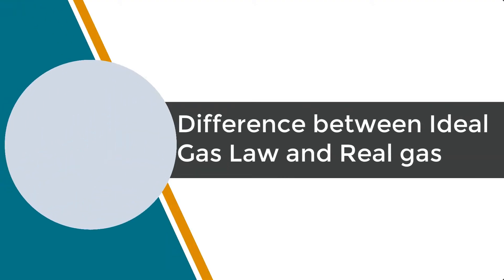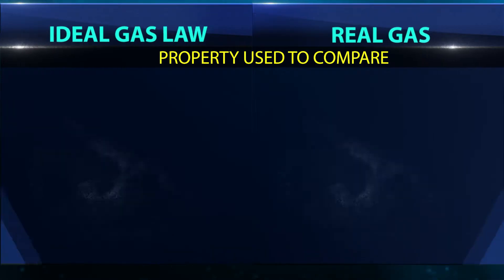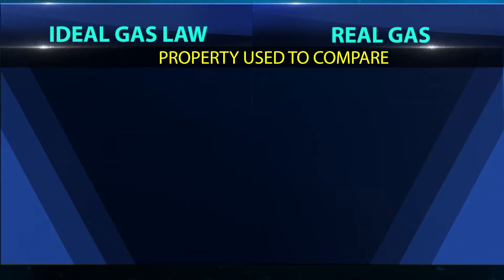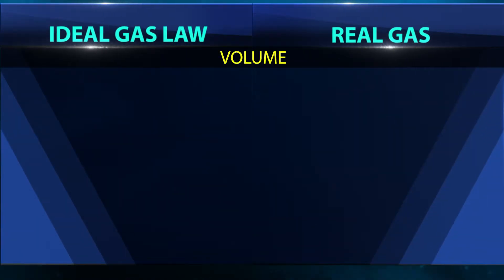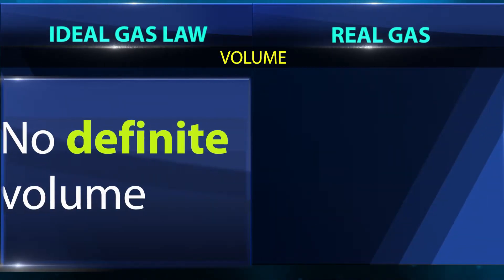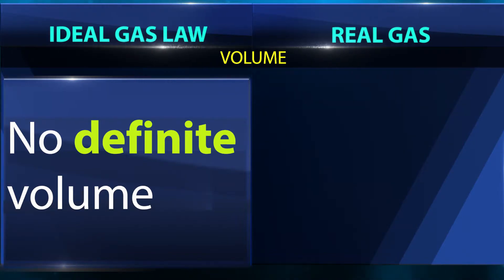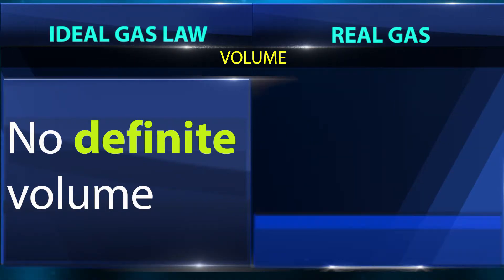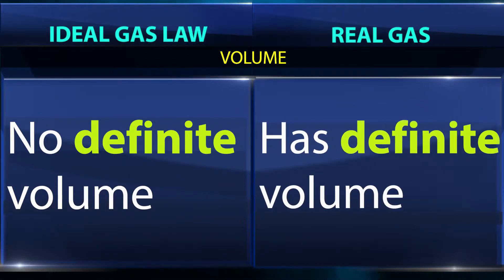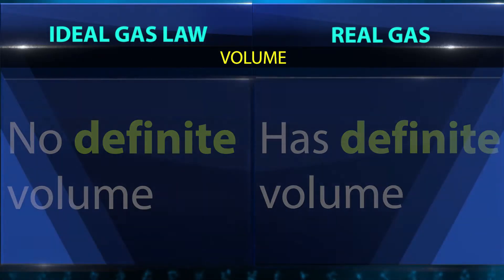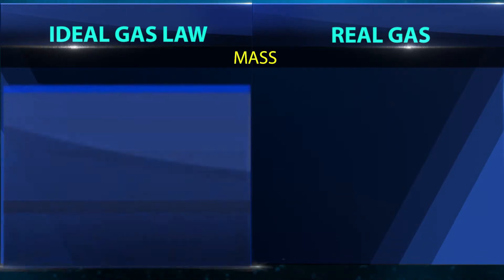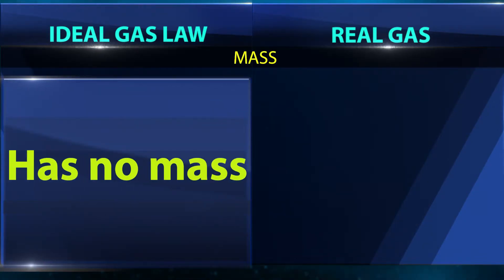The difference between ideal gas law and real gas: Volume — ideal gas has no definite volume, while real gas has a definite volume. Mass — ideal gas has no mass.